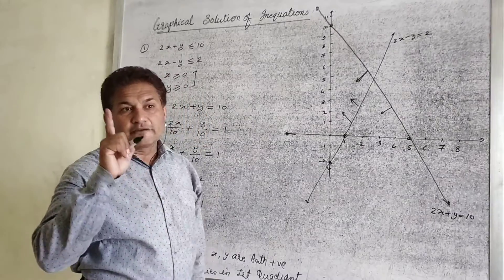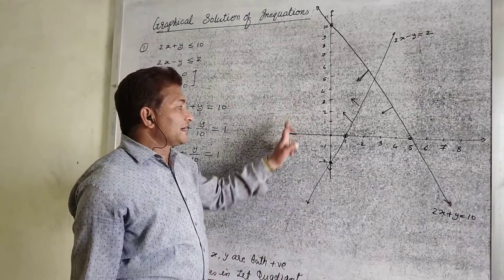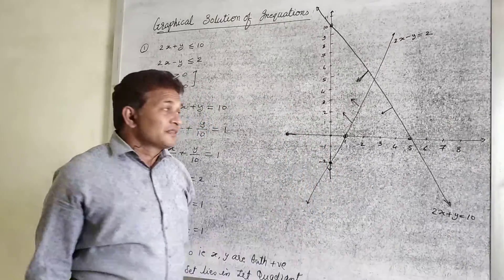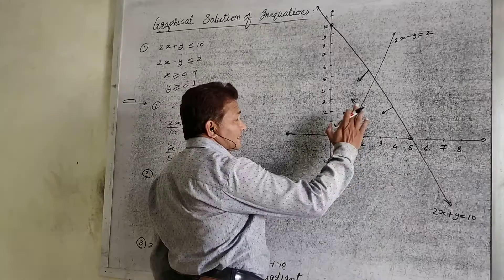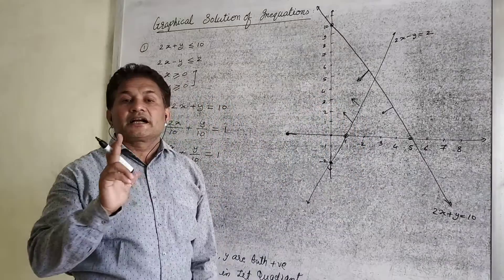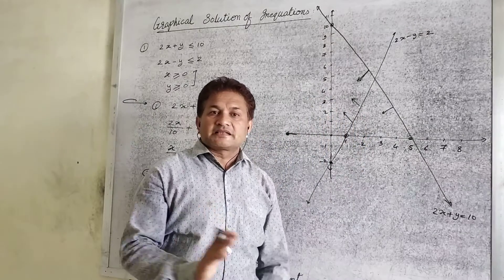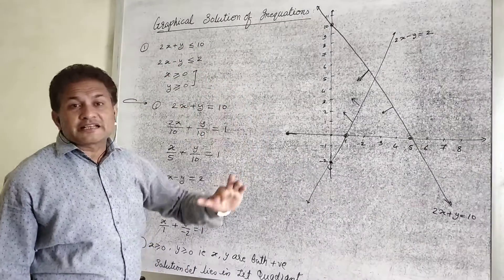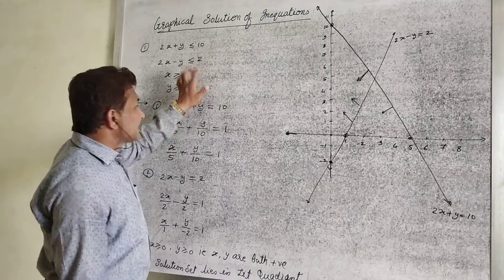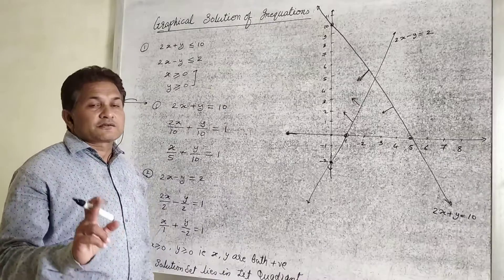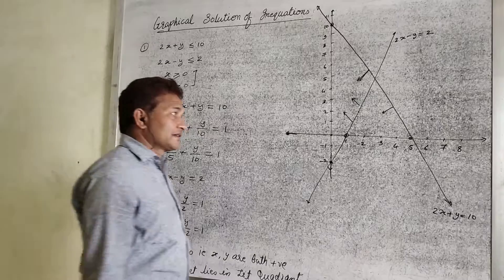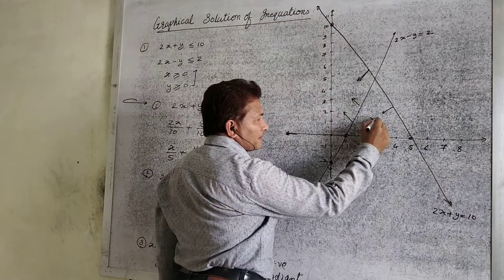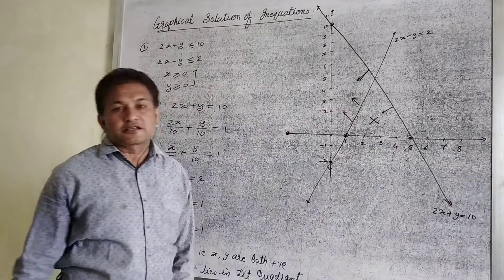Remember that the solution set lies in the first quadrant. So the second, third, and fourth quadrant regions are not part of the solution set. For the second line, we need the solution set above the line, so the region below is not in the solution set. We need the solution set of points below the first line, therefore regions outside these boundaries are not included in the solution set.